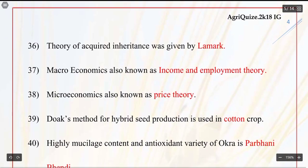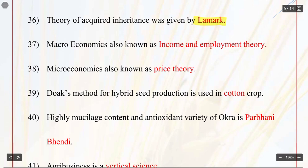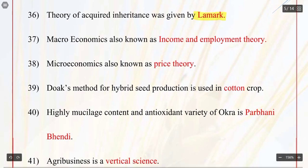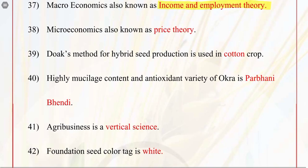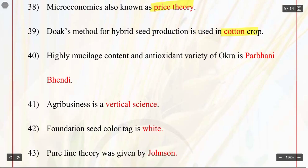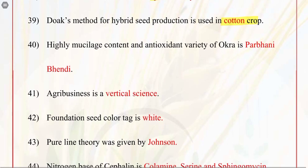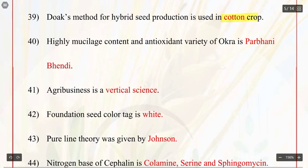Q36. Theory of acquired inheritance was given by Lamarck. Q37. Macroeconomics is also known as income and employment theory. Q38. Microeconomics is also known as price theory. Q39. Dox method for hybrid seed production is used in cotton crop. Q40. Highly mucilage content and antioxidant variety of okra is Parbhani Bhindi.